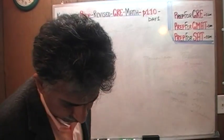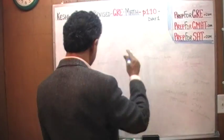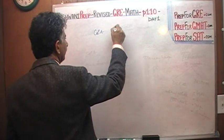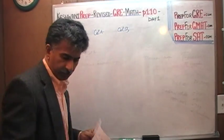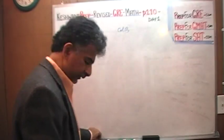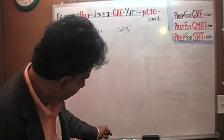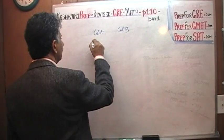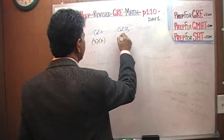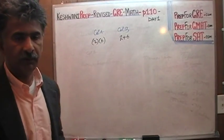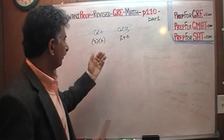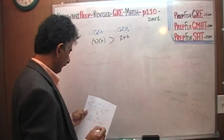The very first problem on page 110 gives us two quantities in column A and column B. In the first column we have 2×6, in the second column we have 2+6. Obviously, 2×6 is 12, which is more than 8. The answer is A.